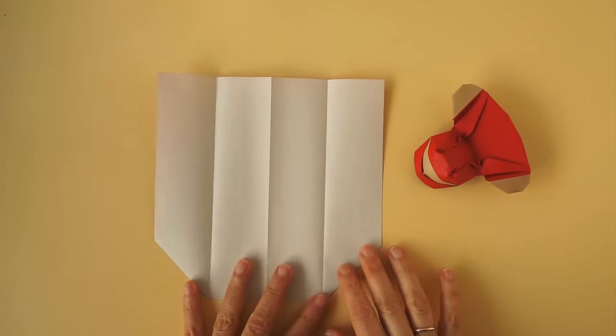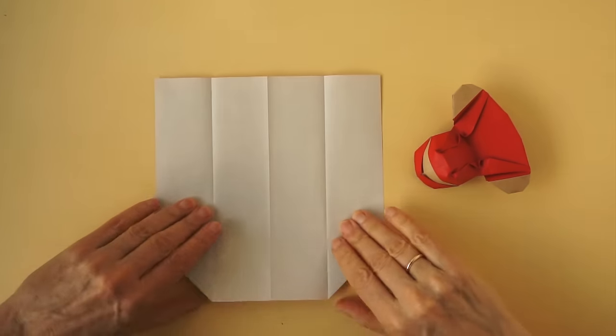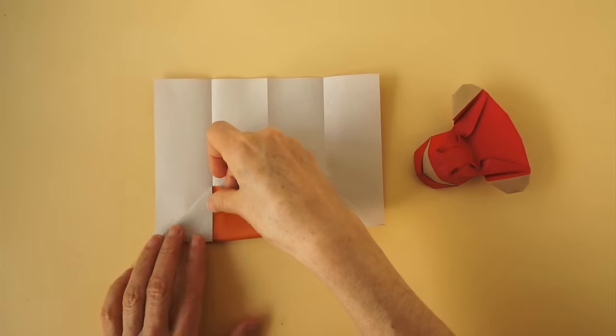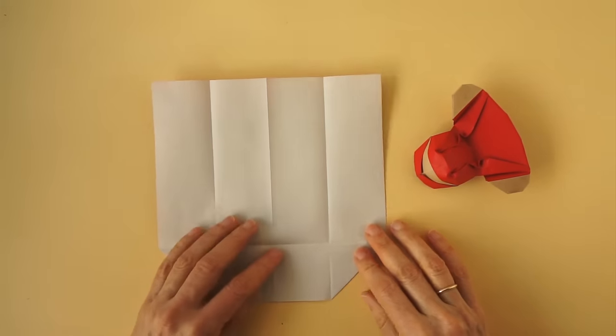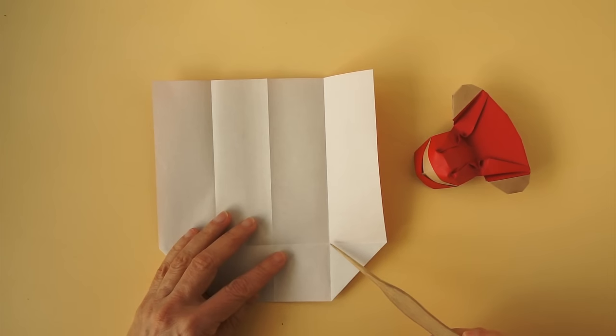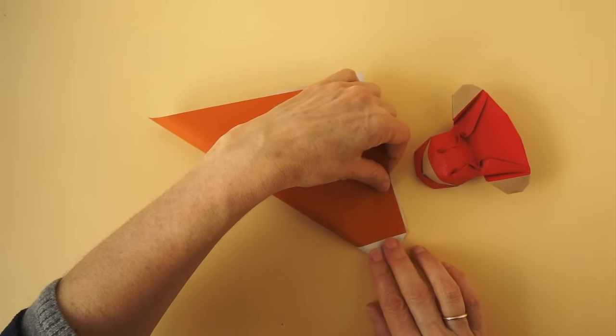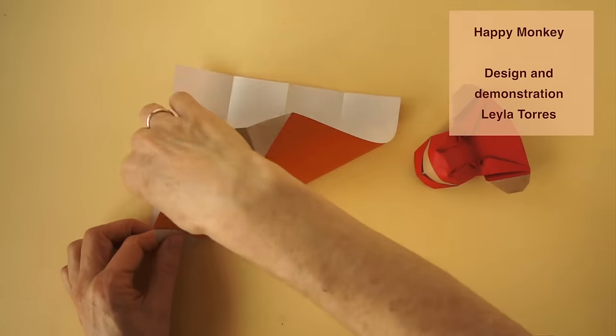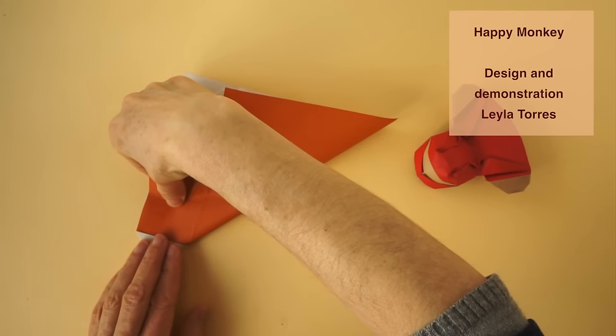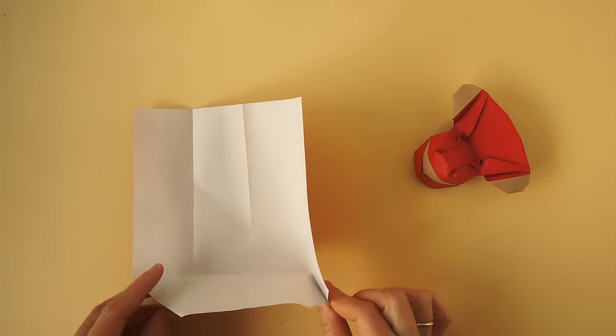Turn it over. We make a fold connecting these two corners. Unfold. We are going to make a short fold from this intersection to the edge. Same here. We pinch here and here.